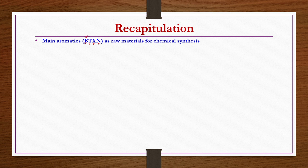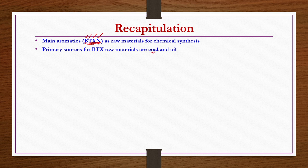So if you have these aromatics, you can produce different types of chemicals. But how to produce the raw materials themselves, since they are not available naturally? For that we listed two sources: coal and oil. From oil, different methods such as steam cracking operations we have already seen in previous chapters can yield various aromatics along with other components.